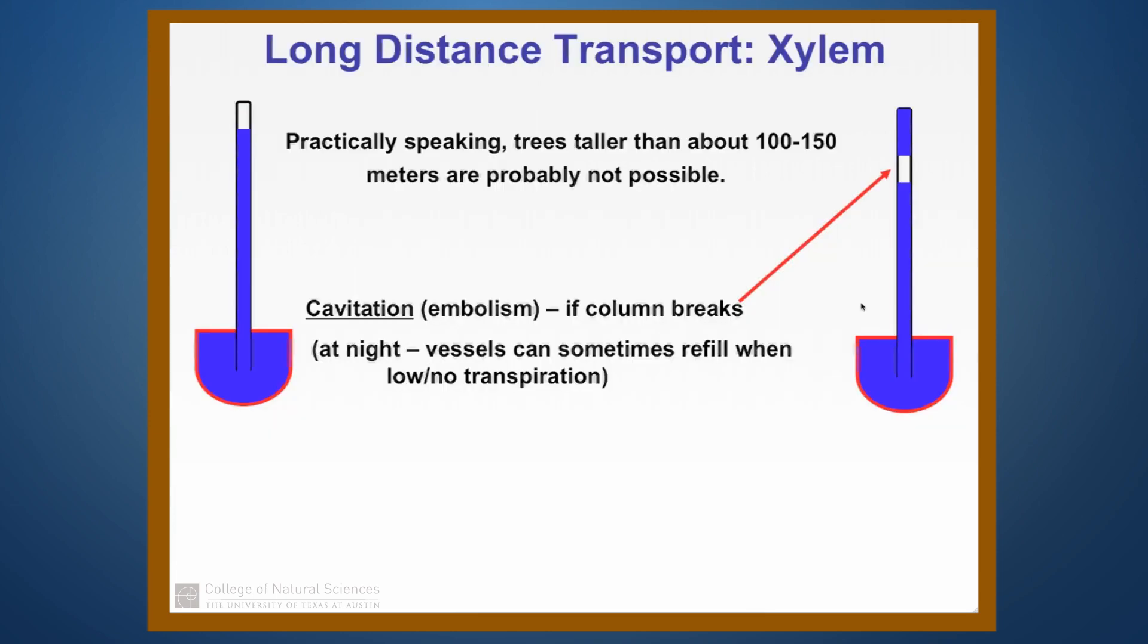Now if the tension in the xylem, the water column in the xylem, becomes too great, it can actually cause that water column to break. And when it breaks, we call that cavitation. It forms a kind of embolism inside of the water column. And this can be disastrous. If things get too dry, then the plant can experience lots of cavitation. And if it can't reestablish a connection there, what will happen is the parts of the plant that were being served by that water column will end up dying because they can't get water anymore.